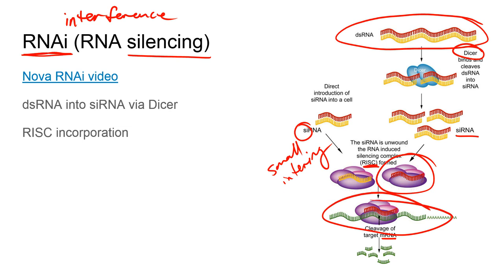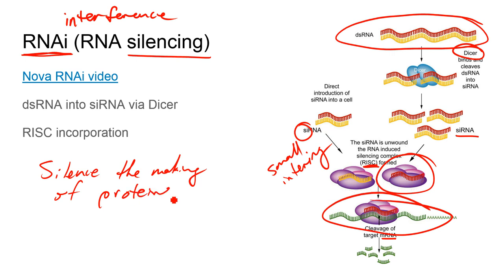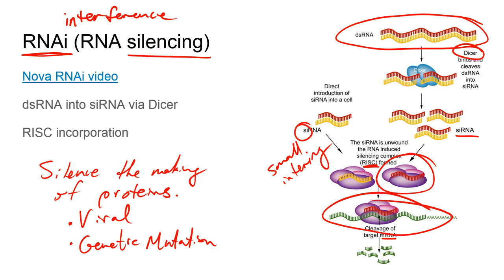So just to summarize: RNA interference can be used to silence or turn off the making of proteins. The proteins being made can either be viral or just due to some genetic mutation. If that's the case, they can either help the patient or stop them from getting sick. We can also use RNA silencing to discover the purpose behind different genes, and that can give us clues as to how they work, what they're used for, and how they're seen in different species.